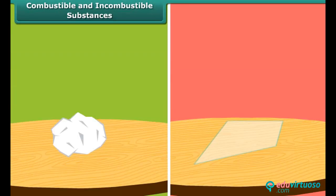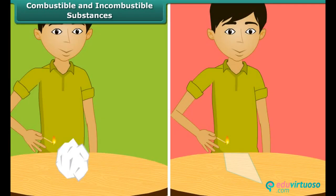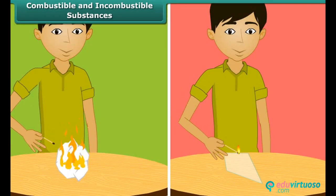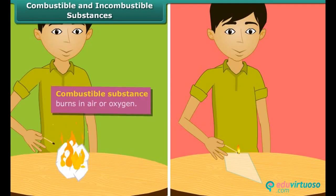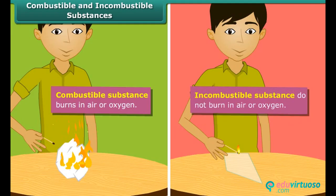There are two types of substances. Some substances catch fire and burn, while the other group does not catch fire. The boy is bringing a lighted matchstick close to paper and glass. Paper catches fire and so it is called a combustible substance. Glass does not burn, and such substances which cannot burn in air or oxygen are called incombustible substances.